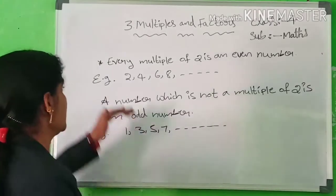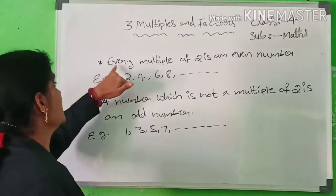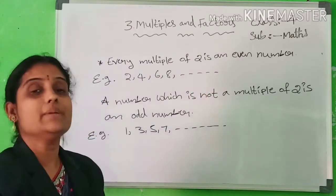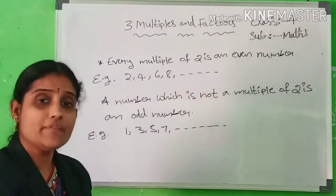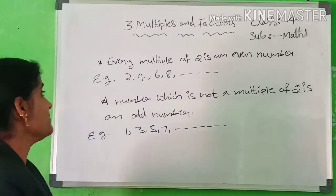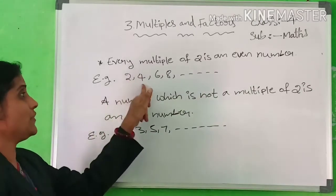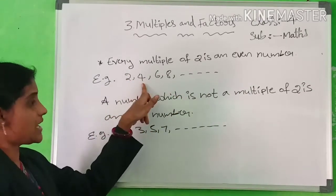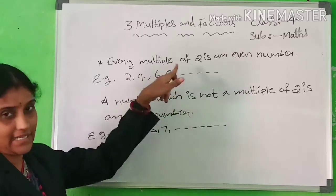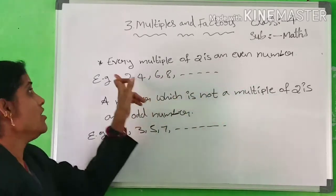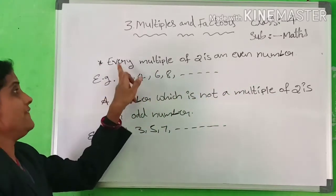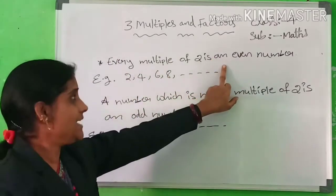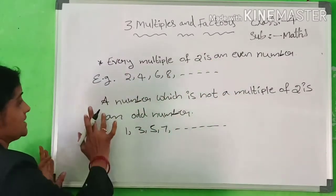Note this. Next property: every multiple of 2 is an even number. For example, 2, 4, 6, 8 — that is, 2×1=2, 2×2=4, 2×3=6, 2×4=8, etc.